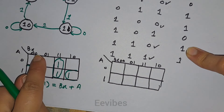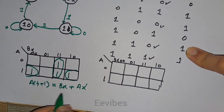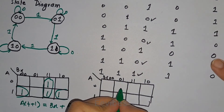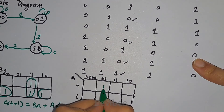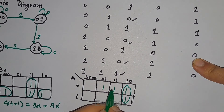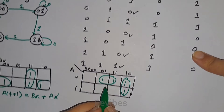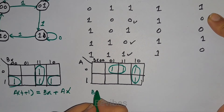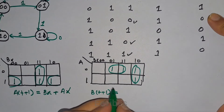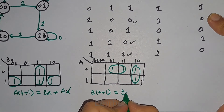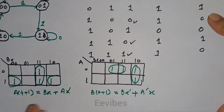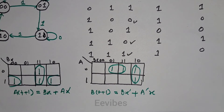Similarly for B(t+1), we place the minterms according to their values and combine them. The expression for B(t+1) is equal to Bx' + A'x. These are the expressions for both output functions.